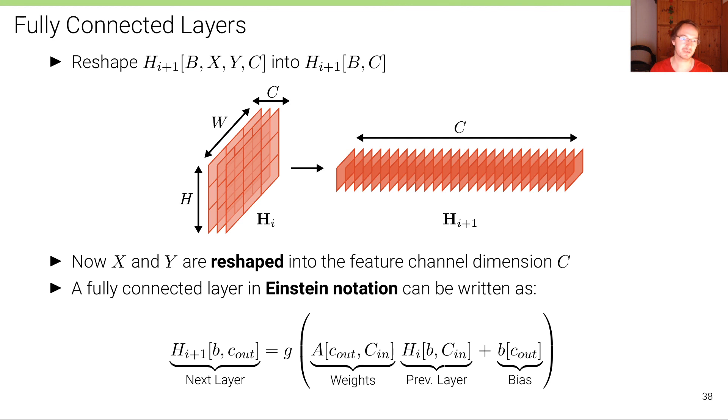This is easily accomplished by a numpy reshape operation. The x and y dimensions are reshaped into the feature channel dimension C. We can then apply a standard fully connected layer on this vector. In Einstein notation, this can be written as: the output tensor for batch B and channel Cout is the activation of this linear operation where we sum over the input channels.